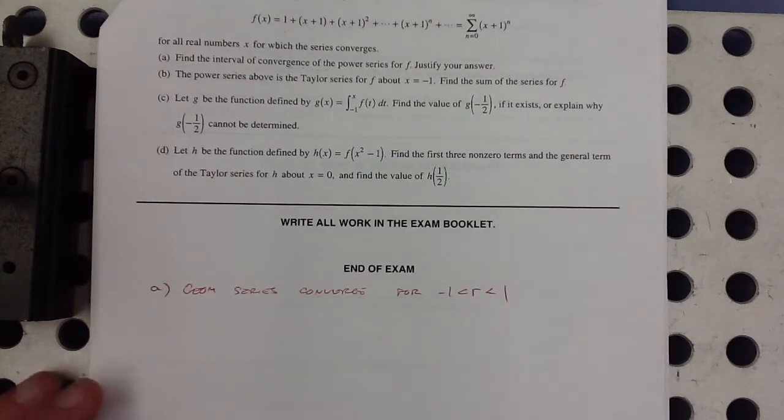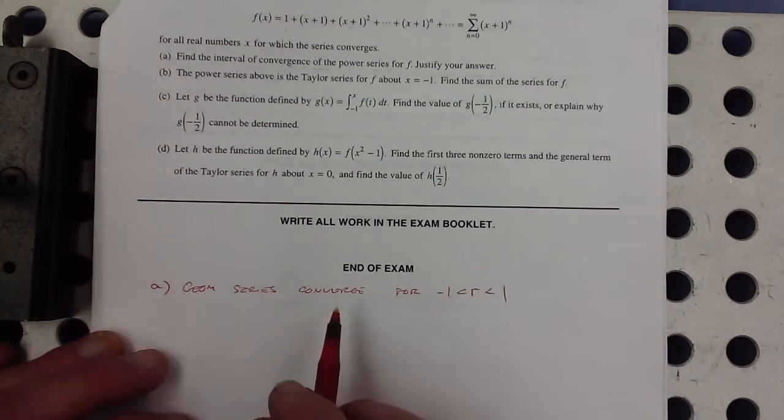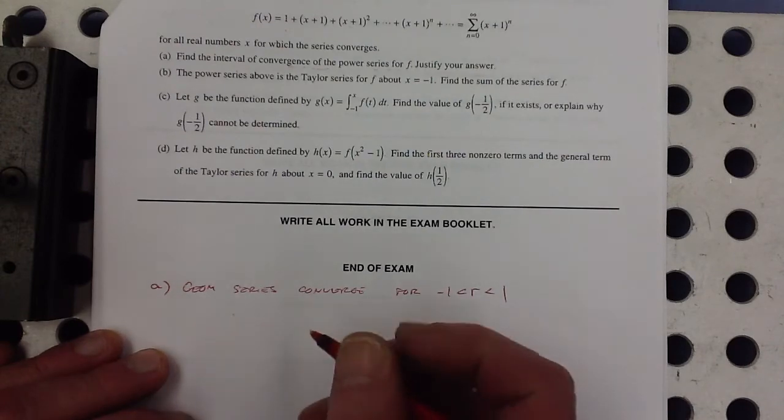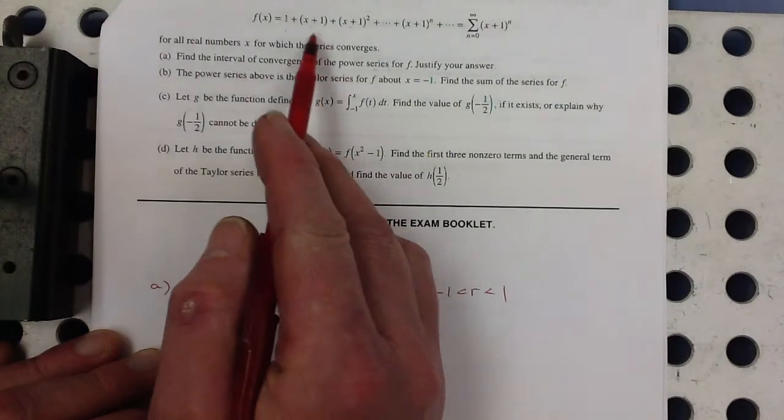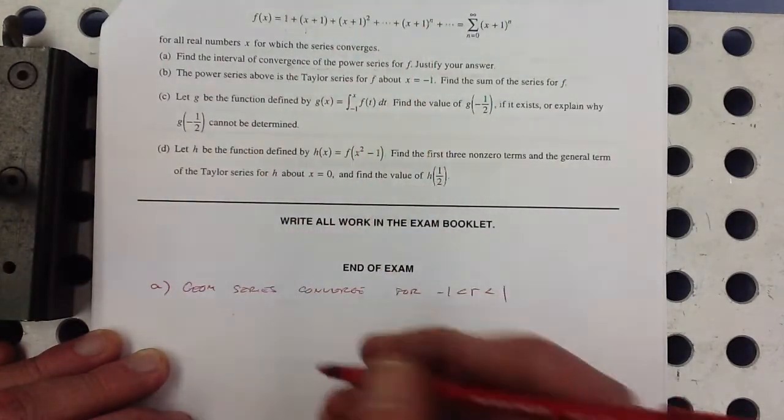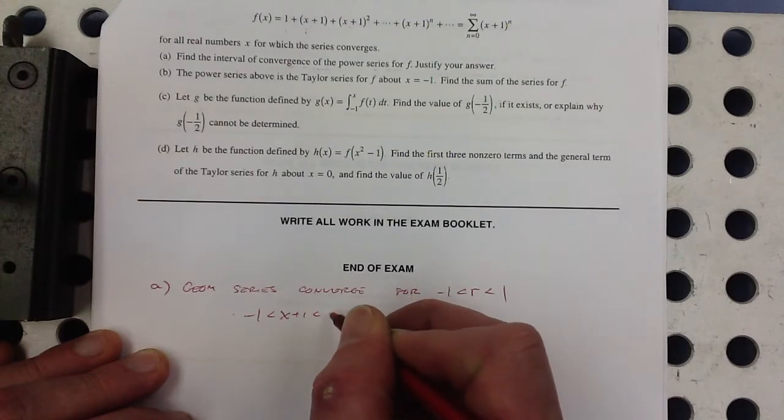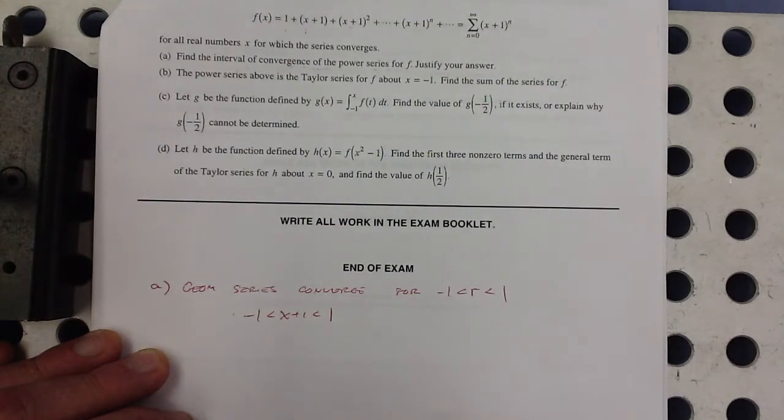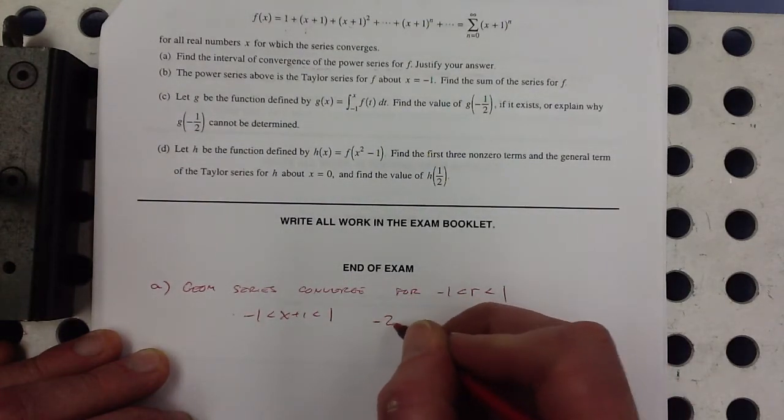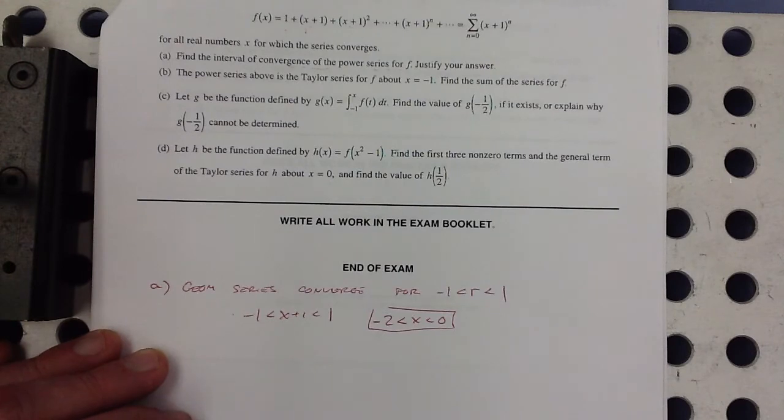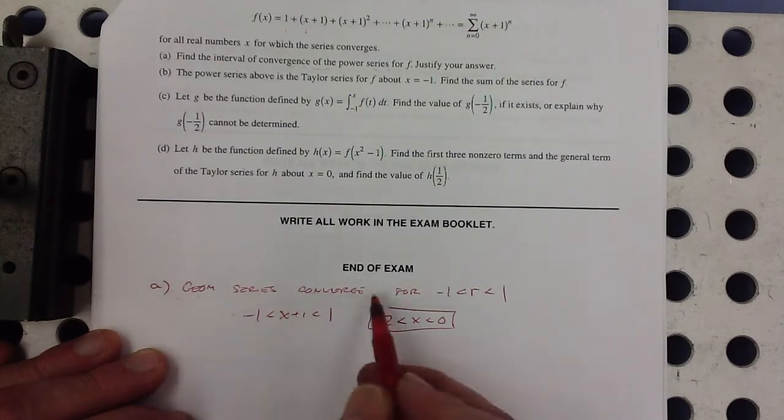So this is the real thing. So that means the multiplier, which is x plus 1, that means x plus 1 has to be in between negative 1 and 1. And that means that that's the interval of convergence. So that's it.